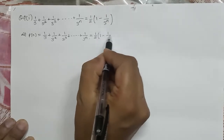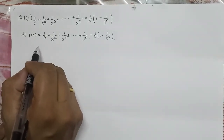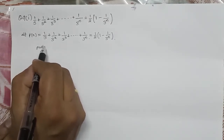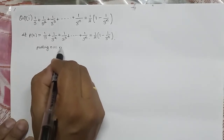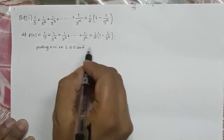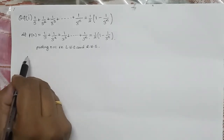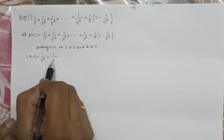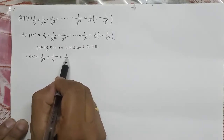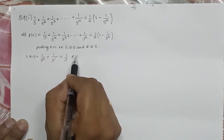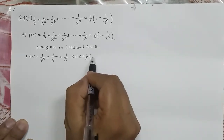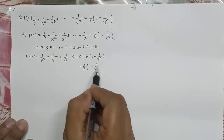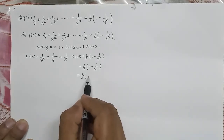Now I'm going to apply the same method I used in the previous video. Putting n = 1 in LHS and RHS. In this question, LHS = 1/3ⁿ, so substituting n = 1, LHS = 1/3. Similarly, RHS = (1/2)(1 - 1/3ⁿ), and substituting n = 1, RHS = (1/2)(1 - 1/3).